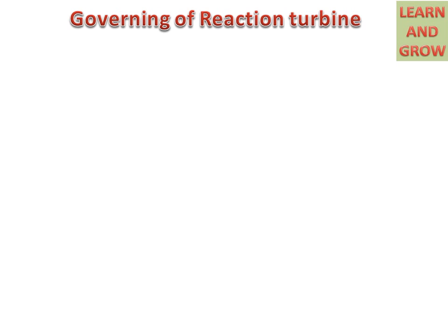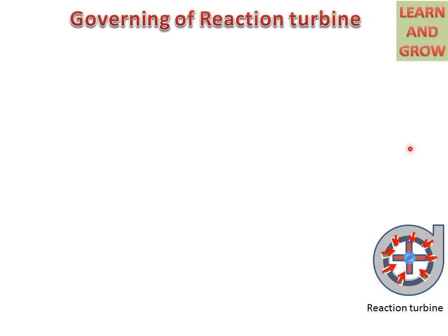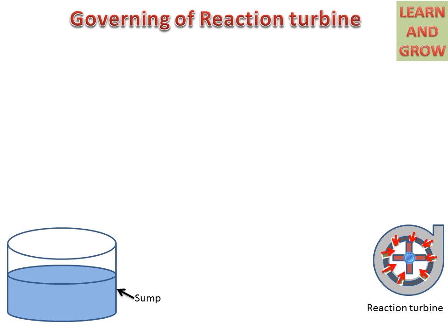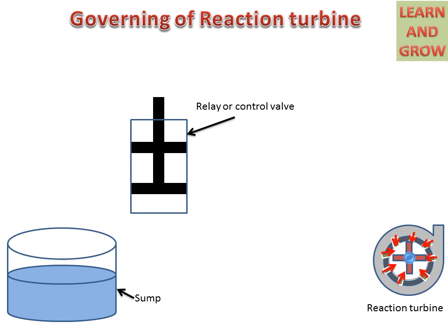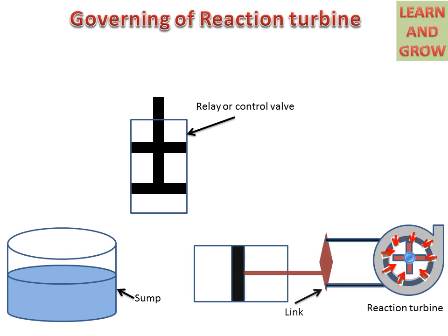First, we will discuss the parts of the governing system of the reaction turbine. We have a reaction turbine with a rotor and guide vanes through which water enters the rotor, and a casing from which water enters. There is an oil sump, a relay or control valve with a piston and piston rod, another cylinder with a piston and linking mechanism. This linking mechanism is connected to the guide vanes system to open and close the guide vanes for regulating the flow of water.